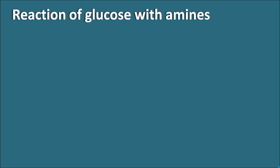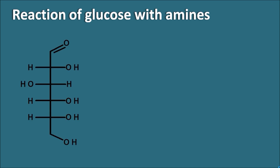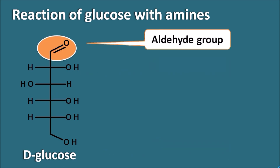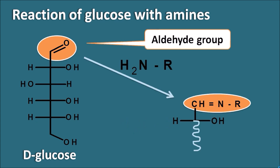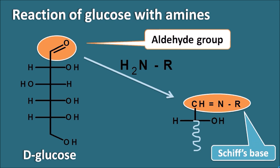Reaction of the glucose with amines. How does glucose react with the amines? This is the structure of D-glucose. D-glucose has one important functional group, that is the aldehyde functional group. Now this aldehyde functional group can react with the amines. A double bond is formed between the carbon and nitrogen, and this type of compound is called a Schiff's base. In this way, glucose, because of the aldehyde functional group, can react with the amines to form the Schiff's base.